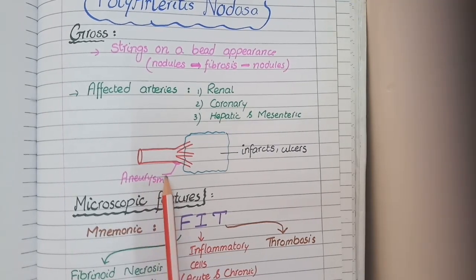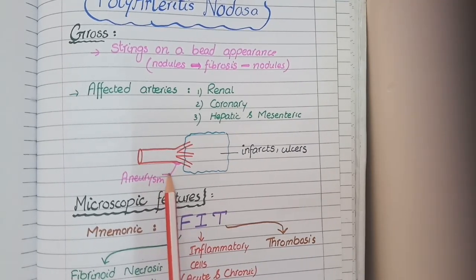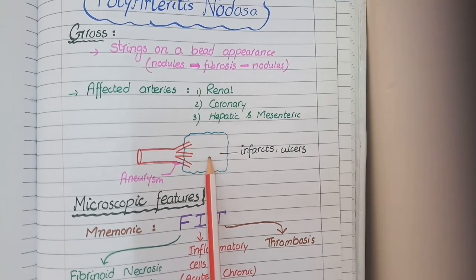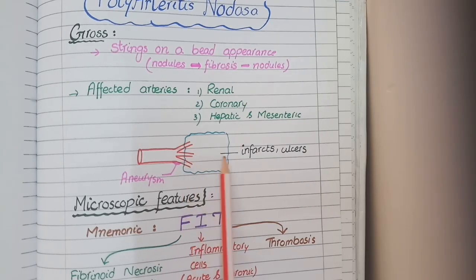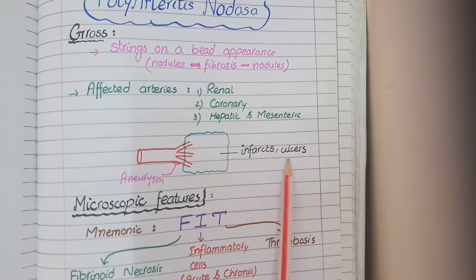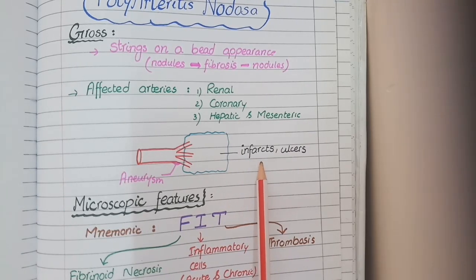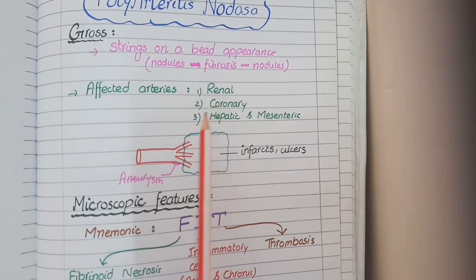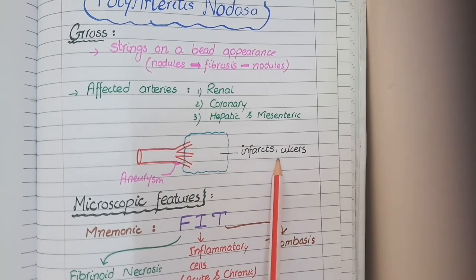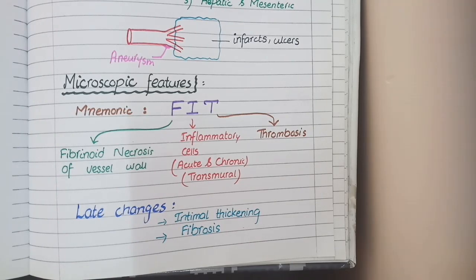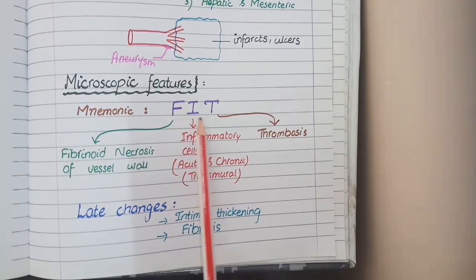Fibrotic vessels in vasculitis tend to develop aneurysmal dilations, so you can see aneurysms in the affected arteries. Vessels affected by vasculitis also gradually become narrower and produce ischemia, which can cause infarcts or ulcerations in the target organs. So on gross features of polyarteritis nodosa, you see strings-on-a-bead appearance, aneurysmal dilation of vessels, and infarcts or ulcerations in the affected organs.